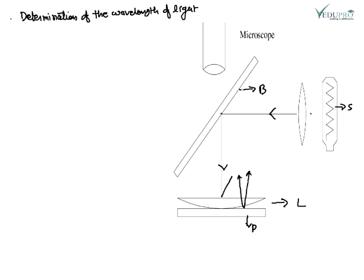This is the method using Newton's rings to determine wavelength. In this arrangement, the effective path difference is 2μt cos r plus λ/2, which we discussed earlier. This is the effective path difference.